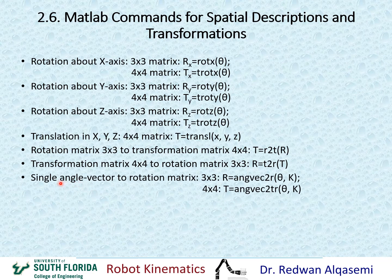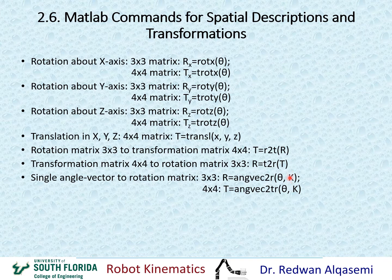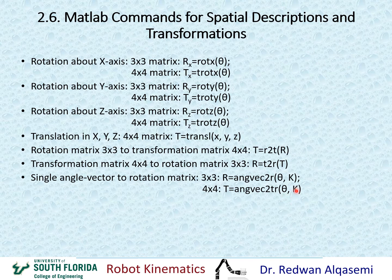If you'd like to convert from a single angle-axis representation to a rotation matrix, you can use angvec2r to get a 3x3 rotation matrix. There are two input arguments: the first is the angle of rotation, and the second is a 3x1 vector k representing the axis of rotation. If you'd like a 4x4 transformation matrix instead, you can use angvec2tr with the same arguments — theta as a scalar and k as a 3x1 vector. The translation portion will be 0, 0, 0.